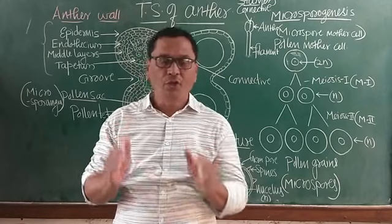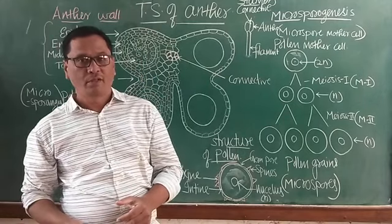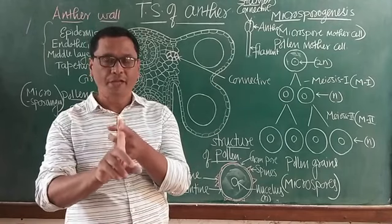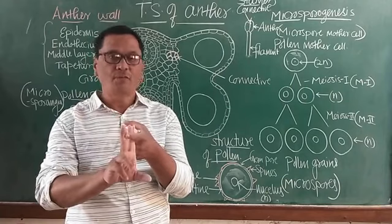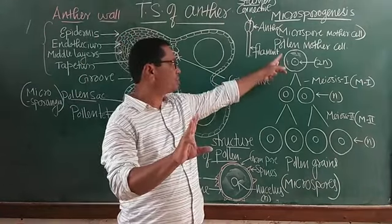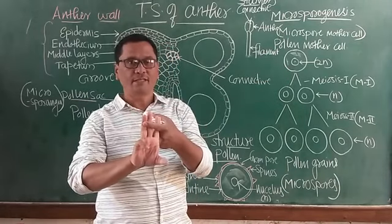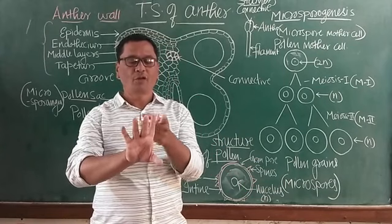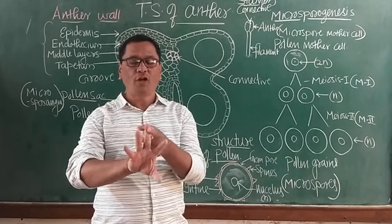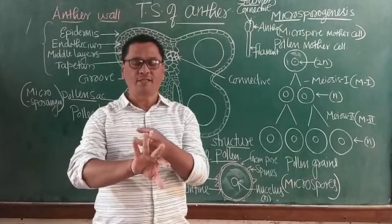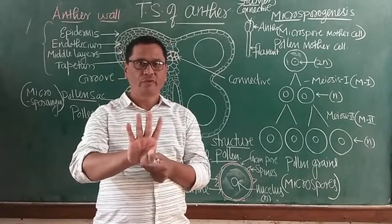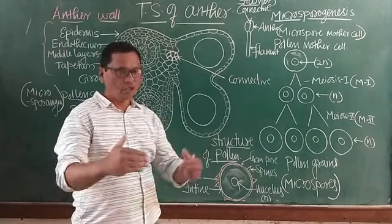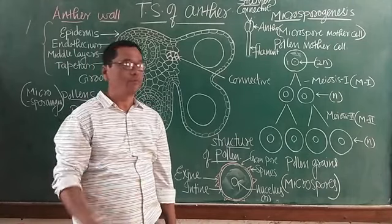All the structures here can be referred to with double names: stamens are microsporophylls; pollen sacs are microsporangia; pollen mother cells are microspore mother cells; and pollen grains are microspores. Both sets of terms are to be remembered, especially for the NEET examination.